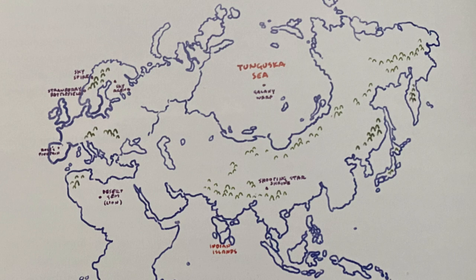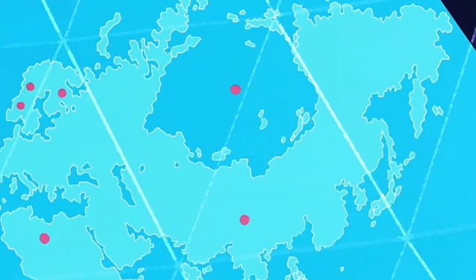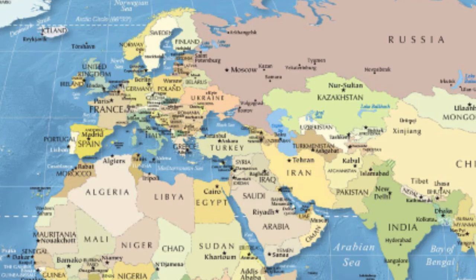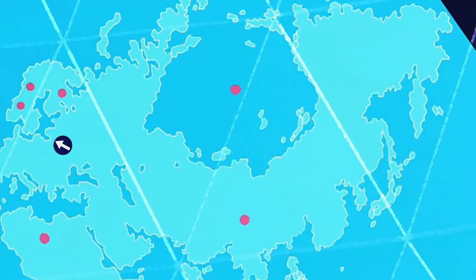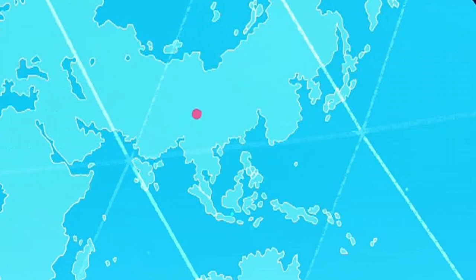Asia is pretty clearly the most affected continent. A lot of Russia is now occupied by the Tunguska Sea, with the galaxy warp at the center. Considering the middle of Russia is just gone, I doubt it's one country in modern times — it's probably split into east and west halves at least. The Tunguska Sea also appears to take up parts of modern day Kazakhstan, Mongolia, and maybe even a little bit of China. India has been roughly cut in half, with the southern half becoming the Indian islands. A lot of southern China has been submerged and Taiwan is missing entirely. Japan looks like it's connected to mainland Asia, though that could just be an illusion created by the white outlines.